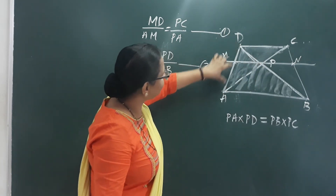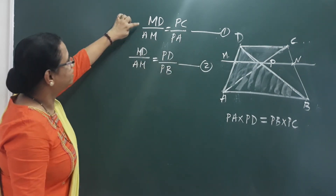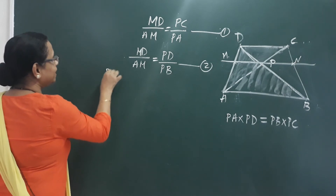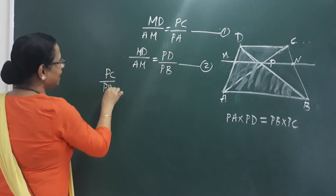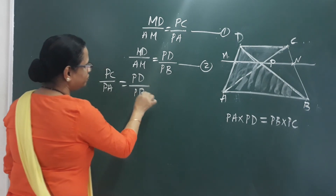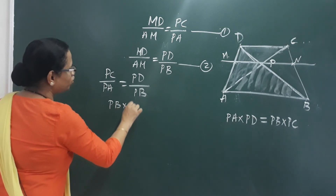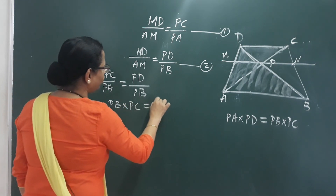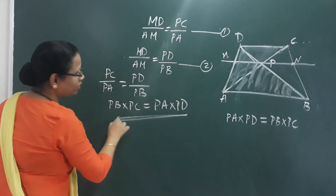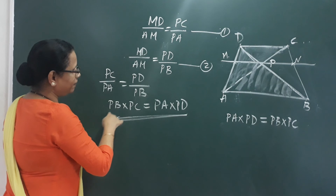Two triangles give us the ratios on both sides. From equations 1 and 2, we can write: PC by PA equals PD by PB. If we cross multiply, PB into PC equals PA into PD. Therefore, PA into PD equals PB into PC — proved.